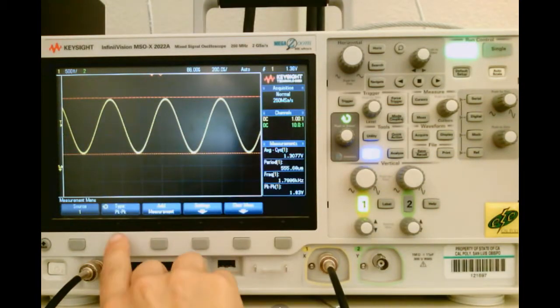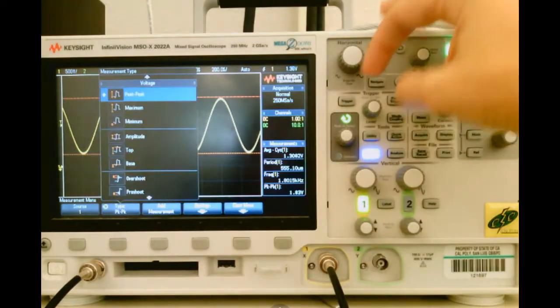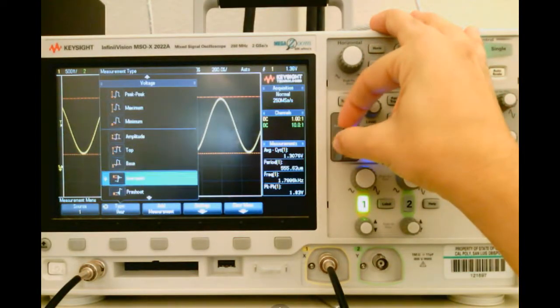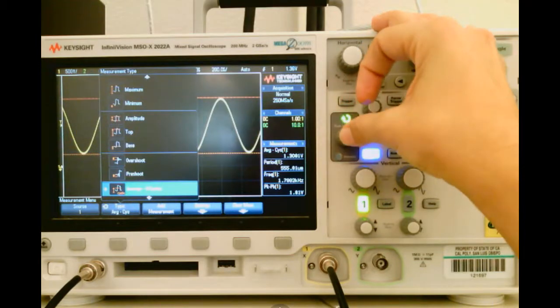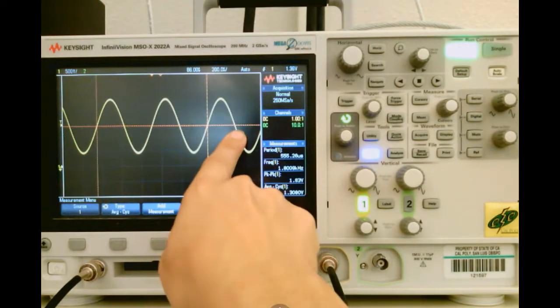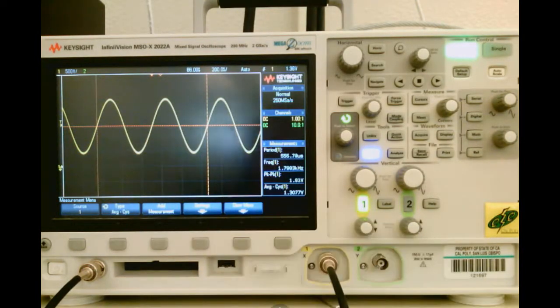And let's say now we want the offset, which will be the average value. Let's go to type again, and select under voltage, average. And there it is. It's at 1.3 volts. So now we have all the same measurements that we got with our cursors using the measurements menu.